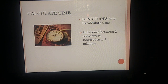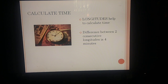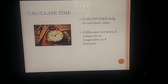Longitudes also help to calculate time. The difference between two consecutive longitudes is four minutes. When we travel eastward towards and beyond the prime meridian, we keep adding four minutes at each passing meridian. When we travel westward from the prime meridian, we subtract four minutes at each meridian. That is how time zones are calculated across the globe.